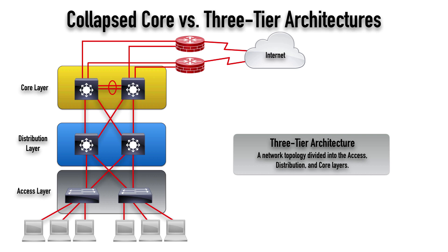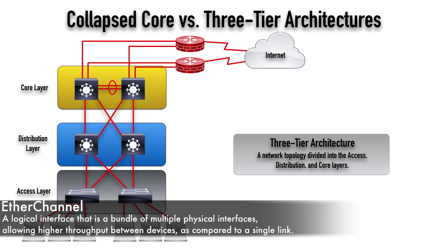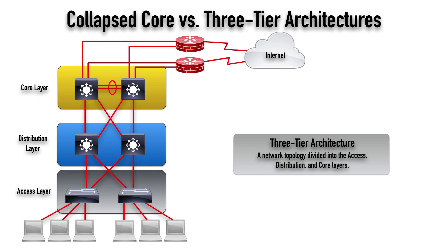Back at the core layer, notice there's an oval surrounding a couple of links interconnecting those switches — those are multi-layer switches. When we see links with an oval around them like this, that's called an EtherChannel. An EtherChannel allows us to have more throughput between a couple of switches by aggregating multiple physical connections. Maybe these are 10-gig connections at the core layer and we have two of them — we can bundle those in an EtherChannel so that logically it looks like one 20-gig interface, allowing us to send traffic very rapidly between these core layer devices.